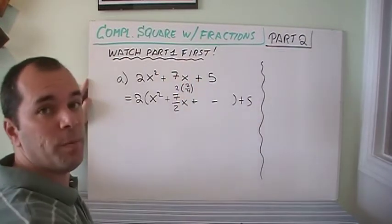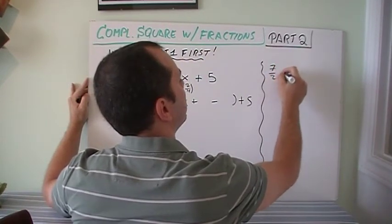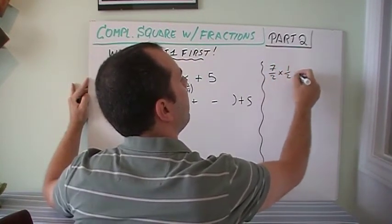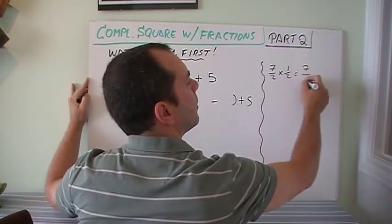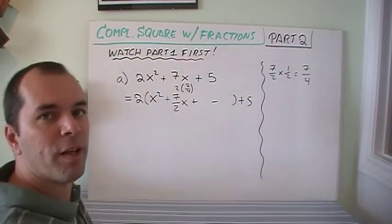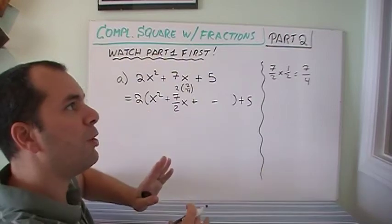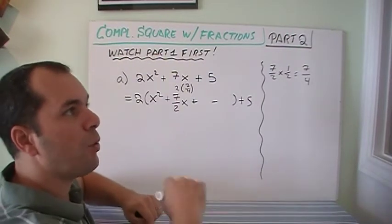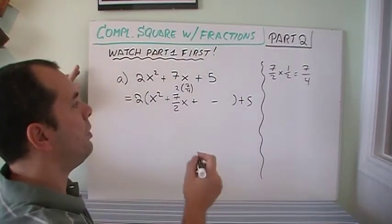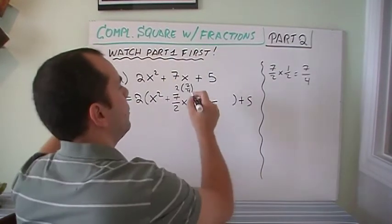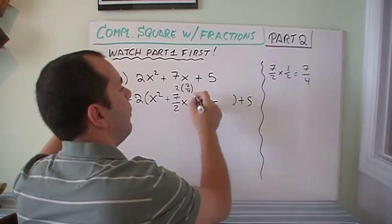It would be 7 fourths, but if I can't do this in my head, I would do on the side 7 half times 1 half, multiply the top, multiply the bottom, and that's 7 over 4 like we have done before. Okay, so if I put 7 over 4 on top, 7 over 4 on the bottom, it's going to create a square that's 7 over 4 squared. How do I square? I just square the top, square the bottom. So 7 squared is 49, 4 squared is 16.